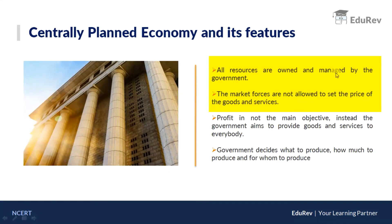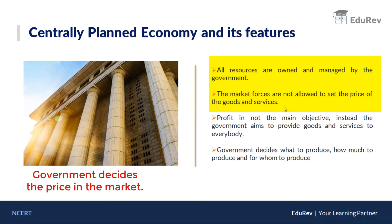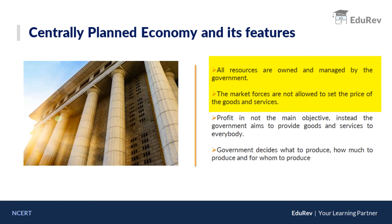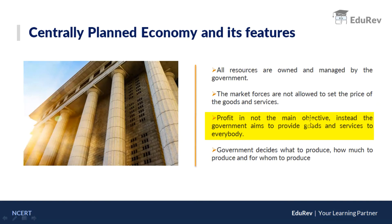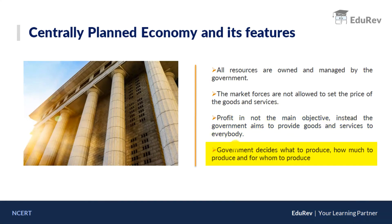All resources are owned and managed by the government. Market forces are not allowed to set the price of goods and services; the central planner decides which goods will have what kind of price, and there is a price limit on all goods and services. Profit is not the main motive — instead, the government aims to provide goods and services to everybody, which is a good side as it leads to equity among people. The government decides what to produce, how much to produce, and for whom to produce.